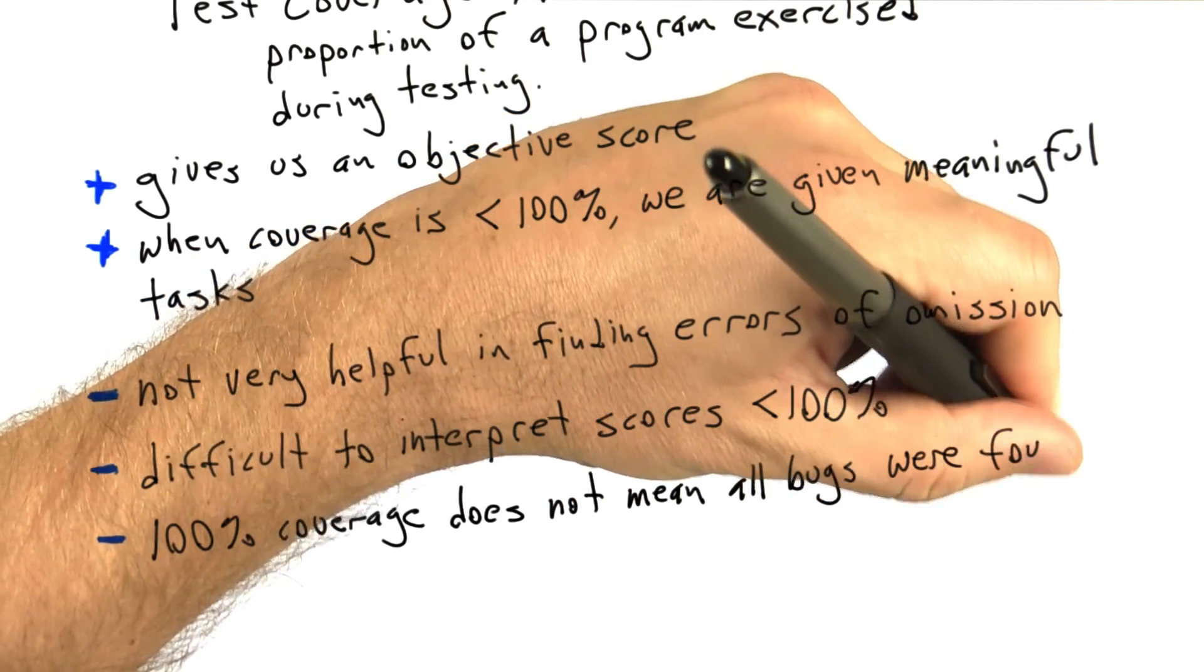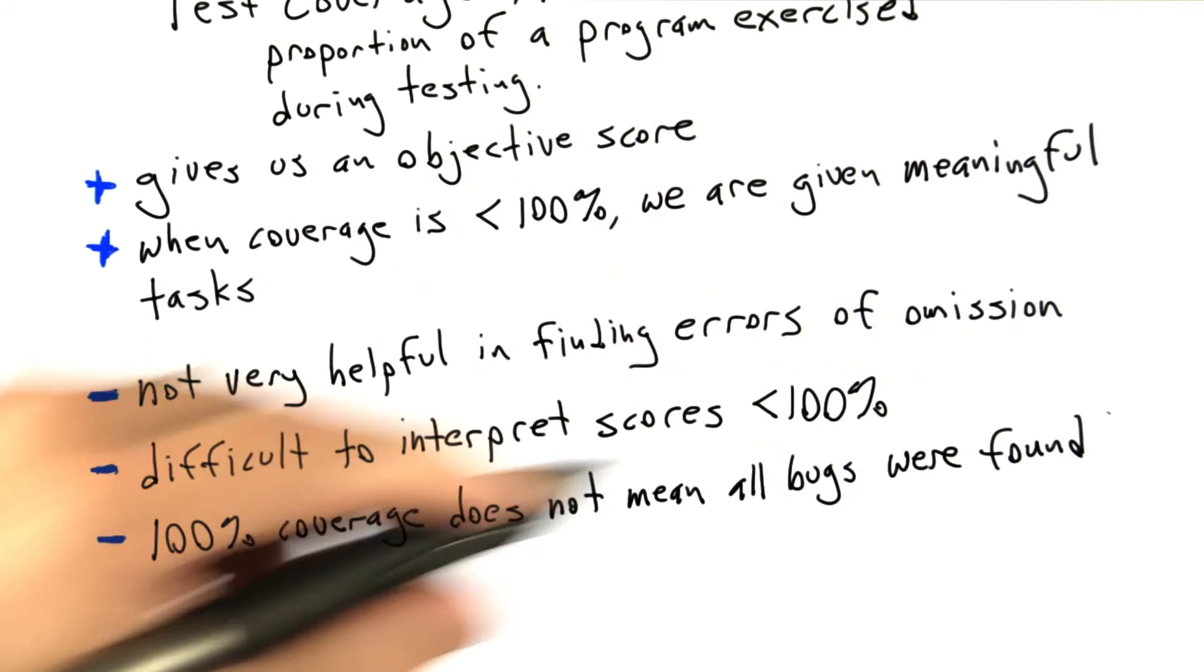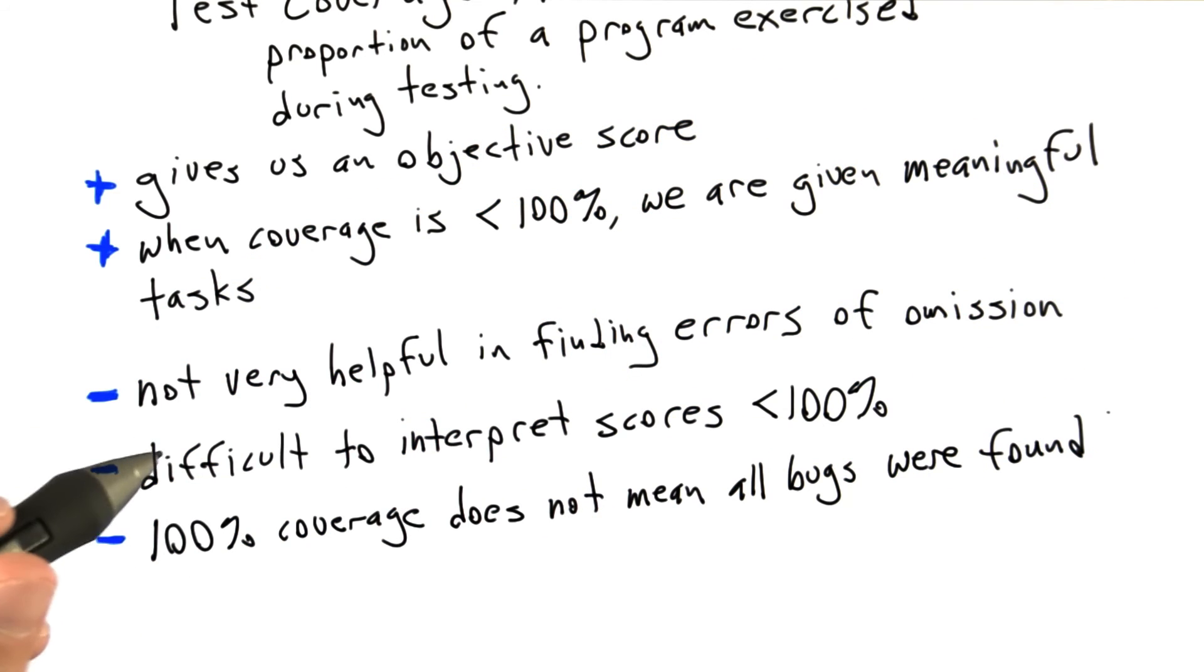The third disadvantage is even 100% coverage doesn't mean that all bugs are found. You can see that easily by thinking about the example where we're measuring our coverage by looking at the number of functions we executed.